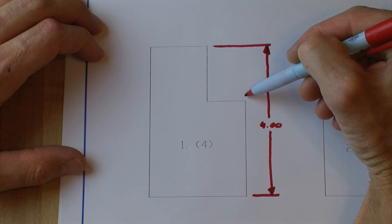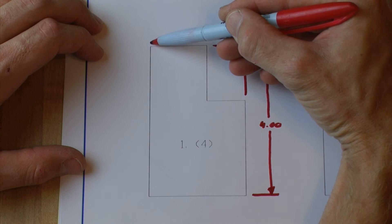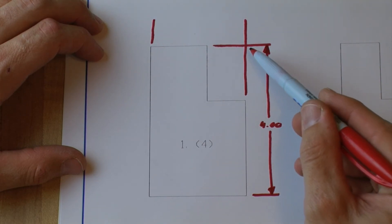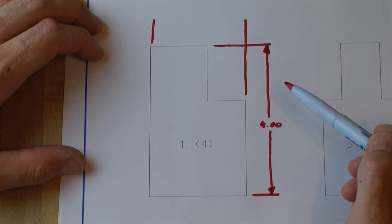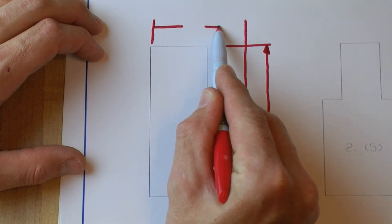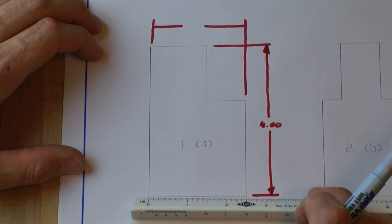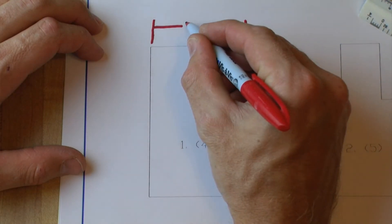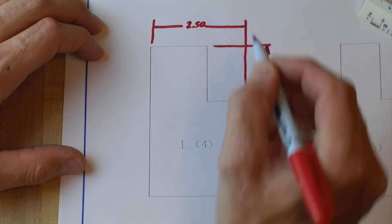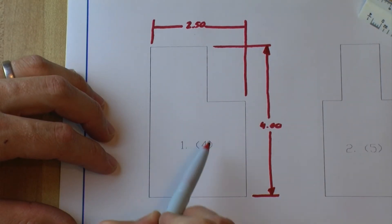I'm going to follow the same procedures for my overall width of my object. Now it is OK for extension lines to cross. We don't want to have dimension lines crossing. So let's go ahead and put some dimension lines in. Let's measure the bottom here which is two and a half inches. Two point five zero. The next thing I want to do is put my additional two measurements in because there are four of them.